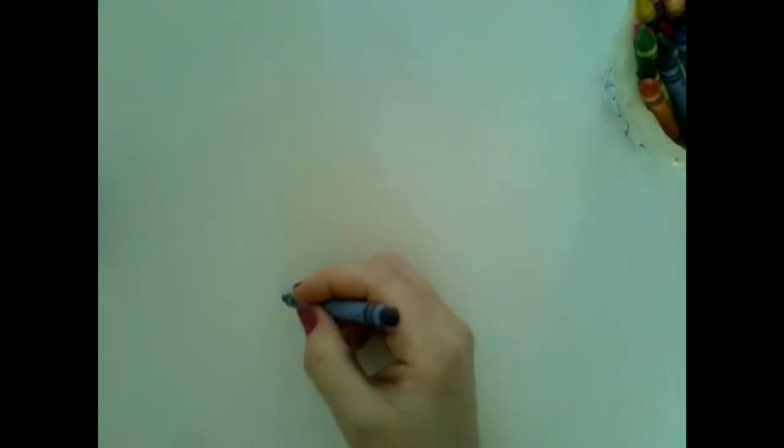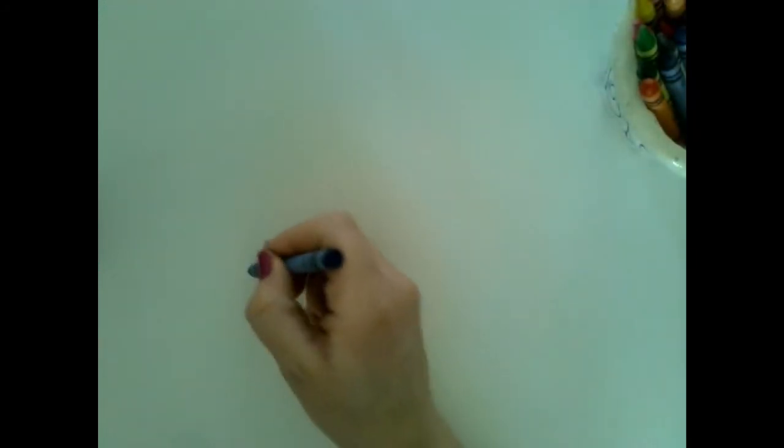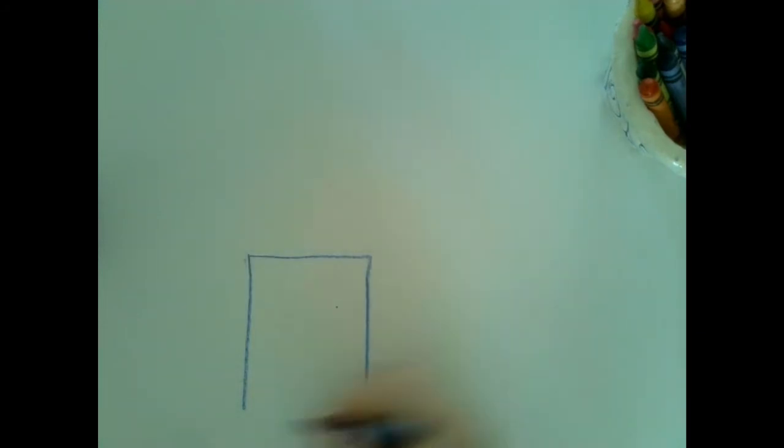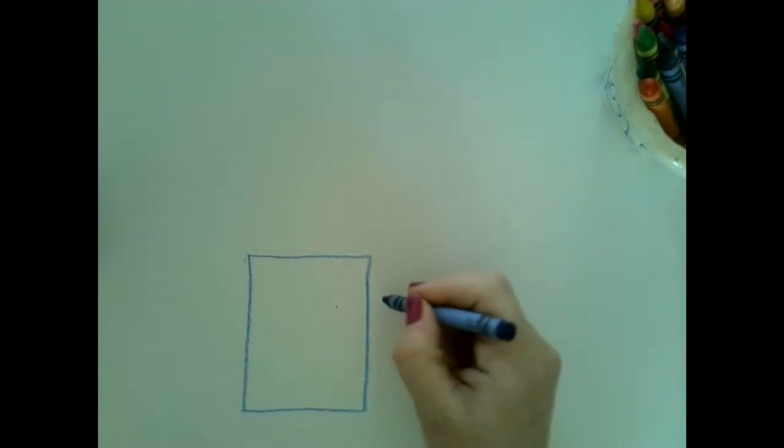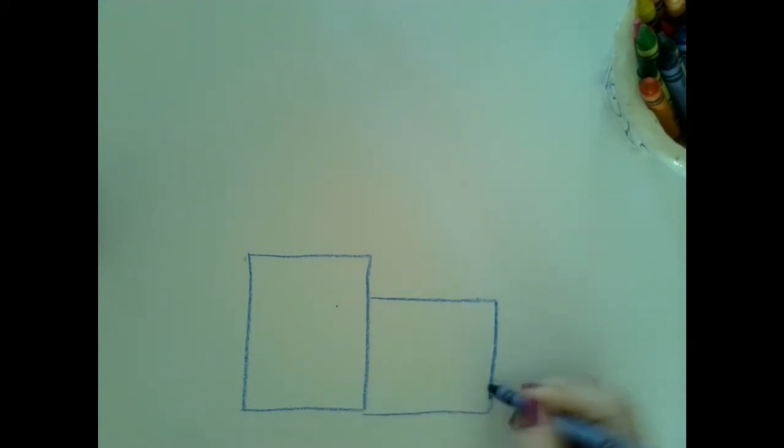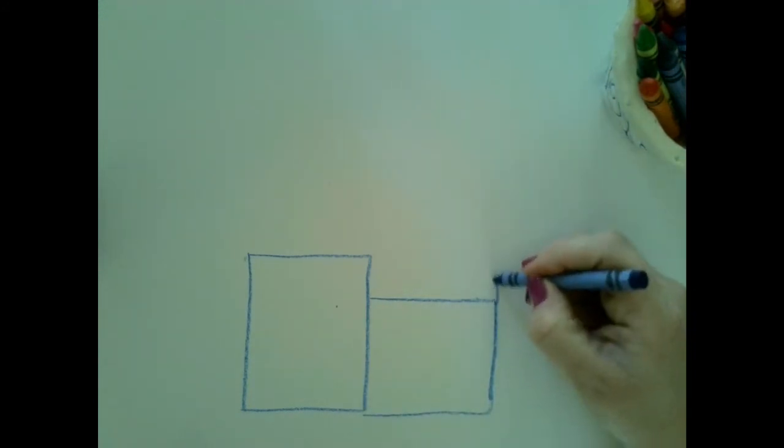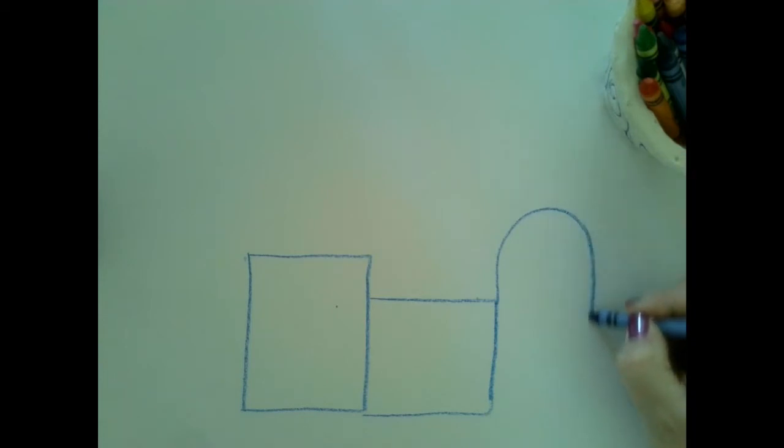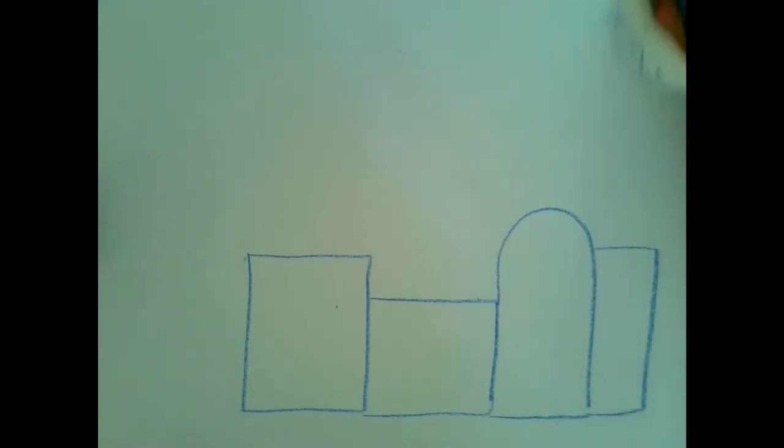And we're going to just create a bunch of shapes that are next to each other. I think I'm going to start with a rectangle, a square. I can even do a half circle shape that's connected to a rectangle there. And maybe another rectangle here. I think I'm going to start with four.